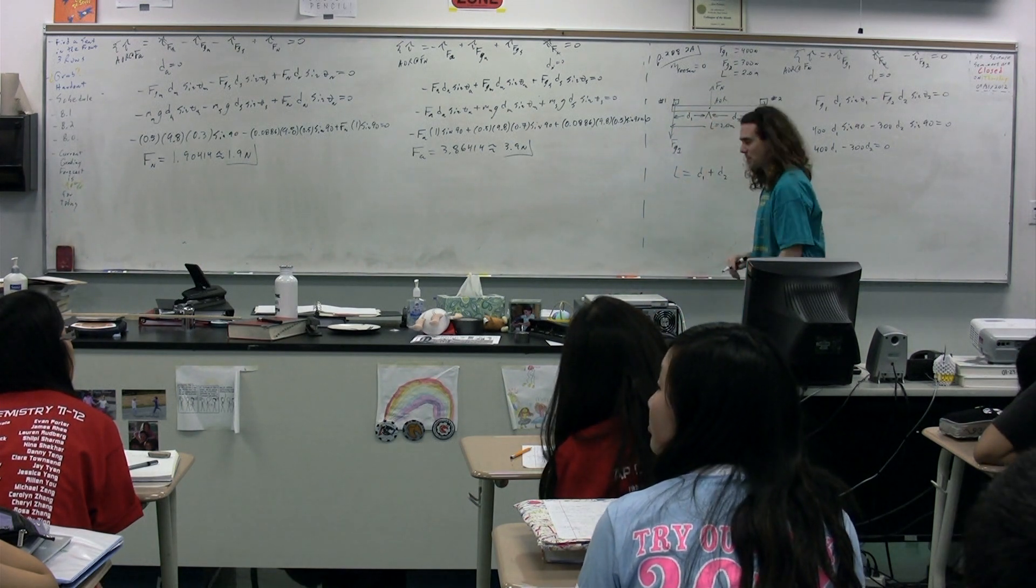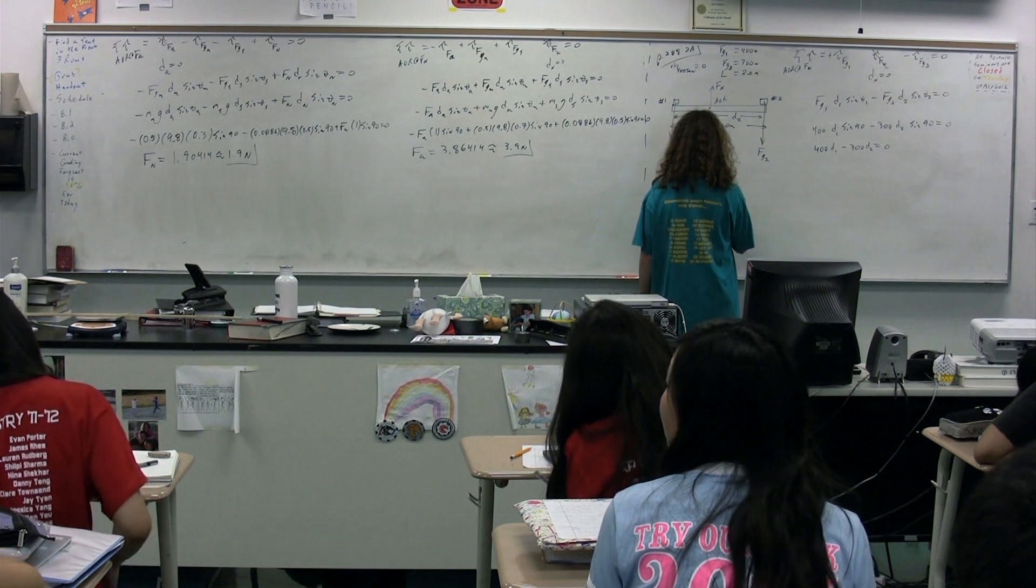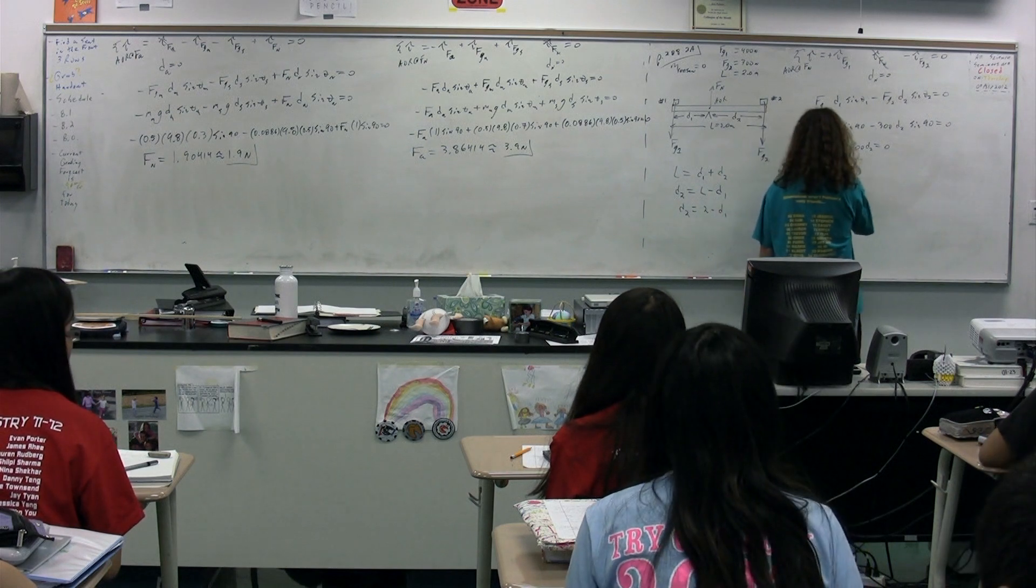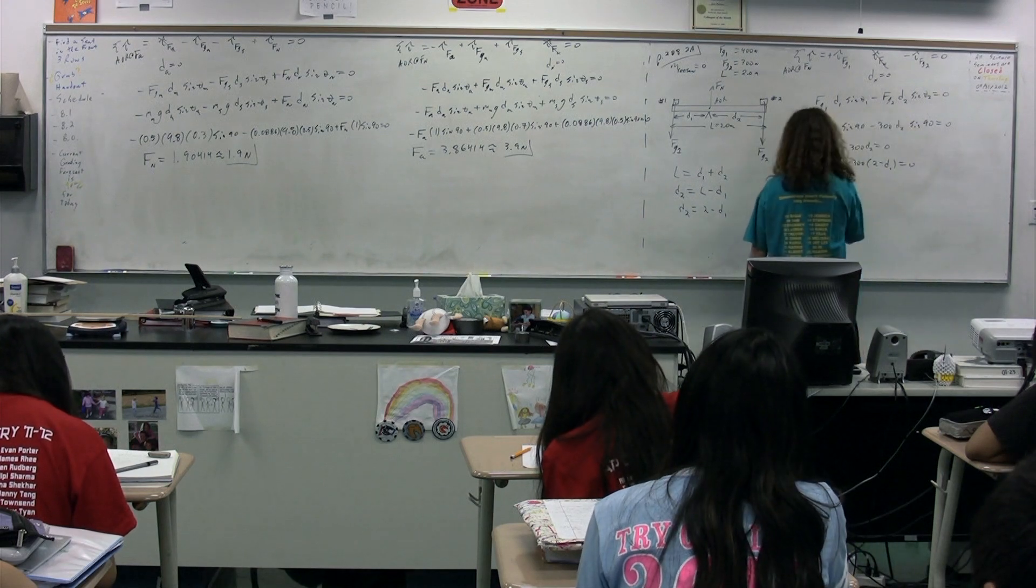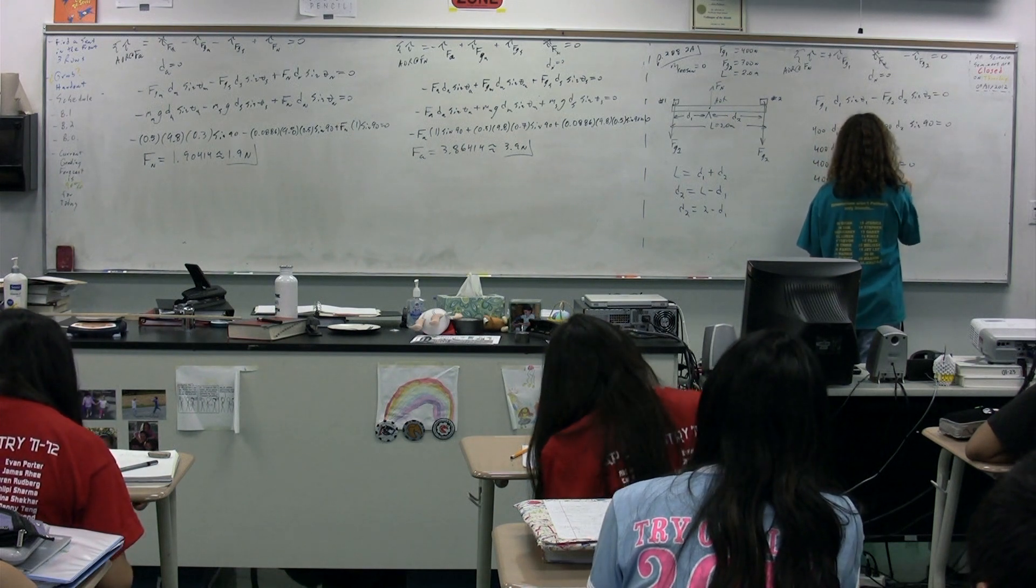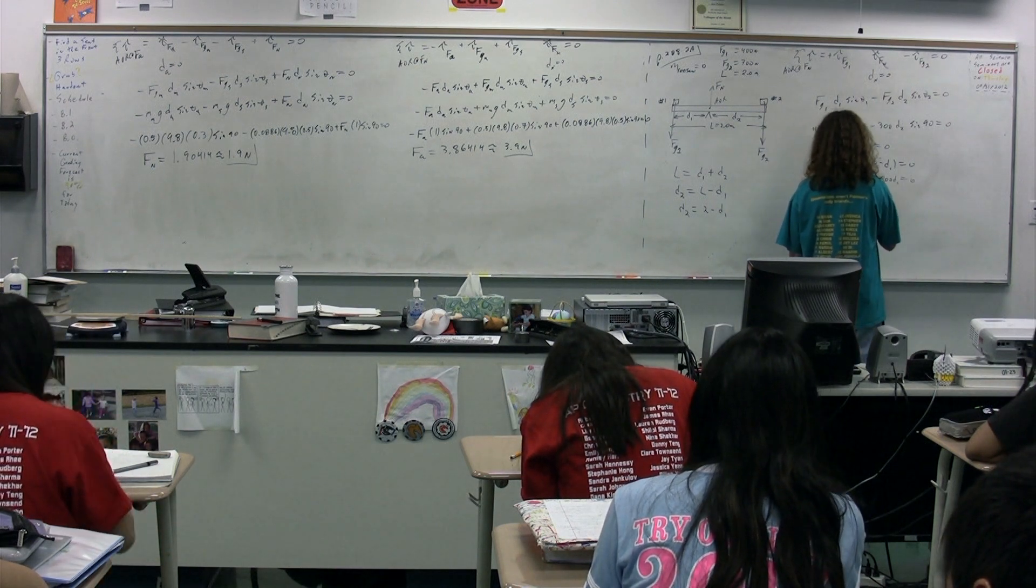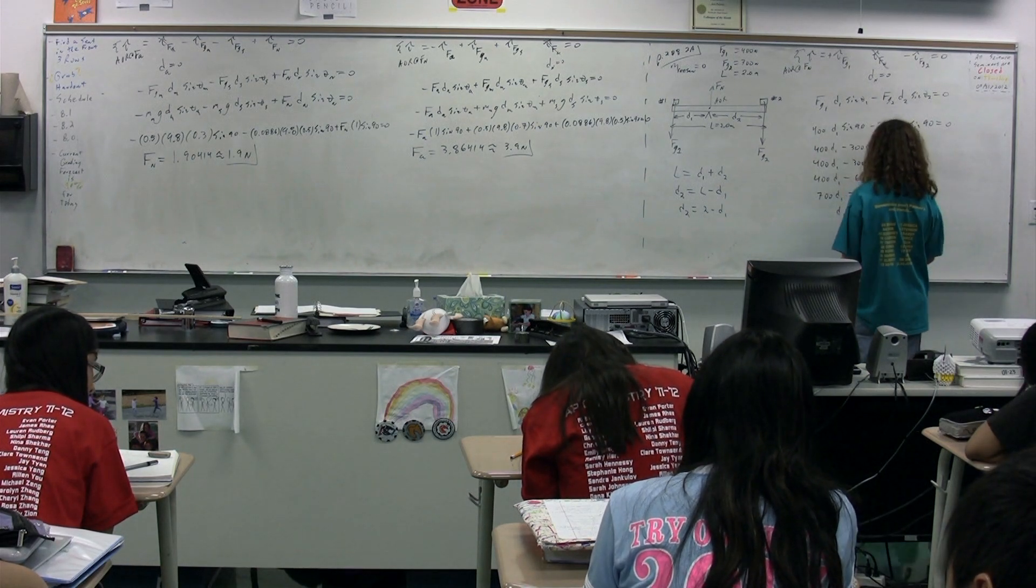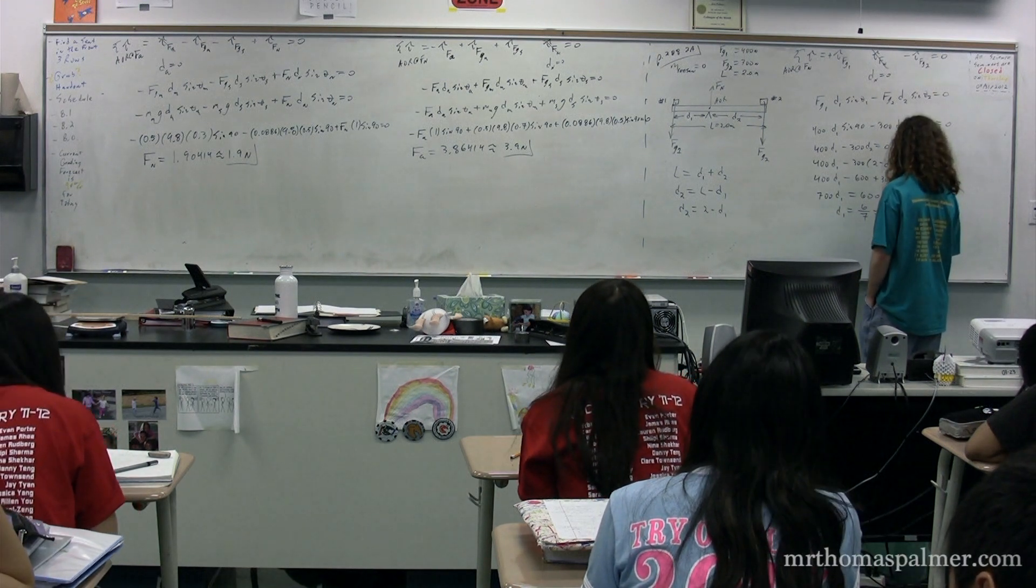So, we can substitute in, we get 400 times lever arm one minus 300 times two minus lever arm one, which is equal to zero, or 400 times lever arm one minus 600 plus 300 times lever arm one, which is equal to zero. Therefore, 700 times lever arm one is equal to 600. Therefore, lever arm one is equal to six divided by seven, which is equal to 0.85714.